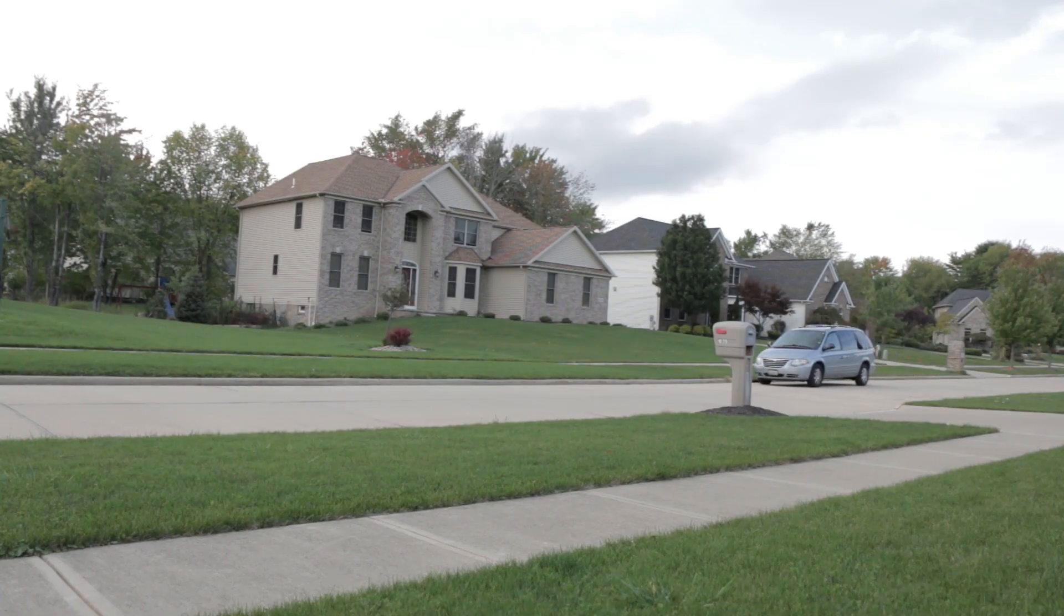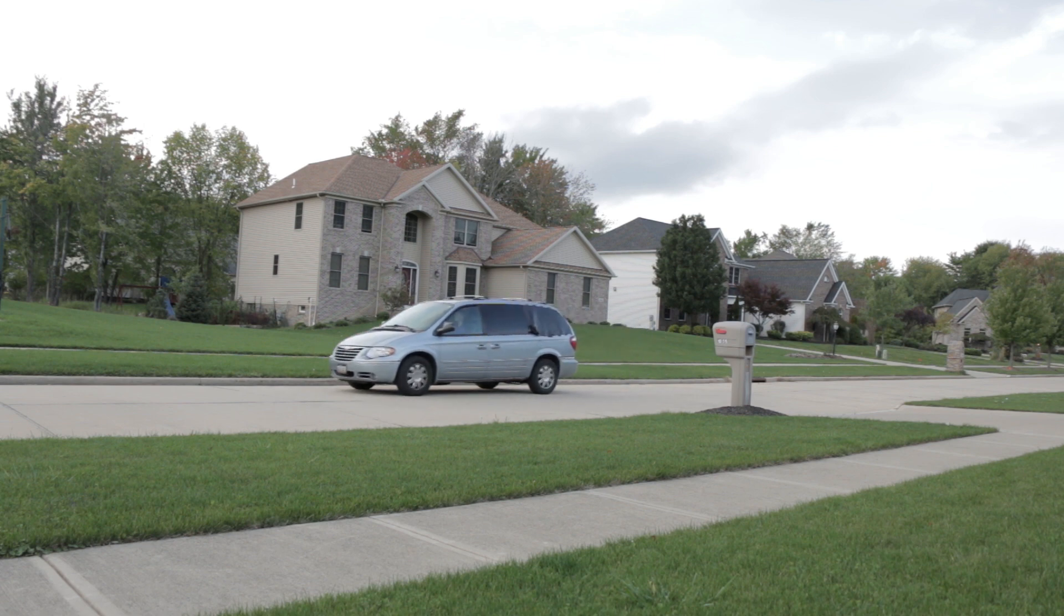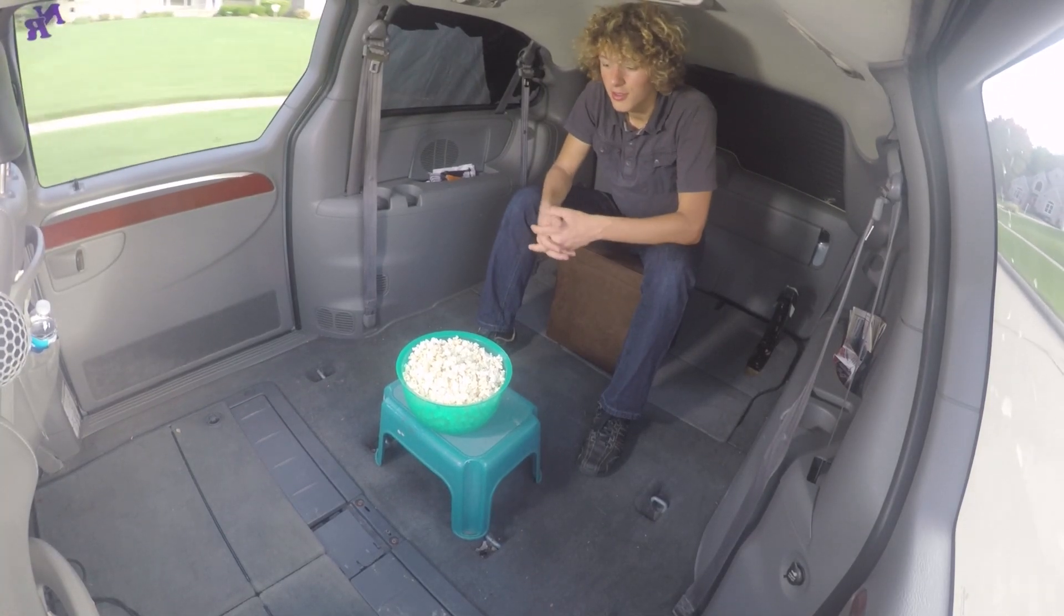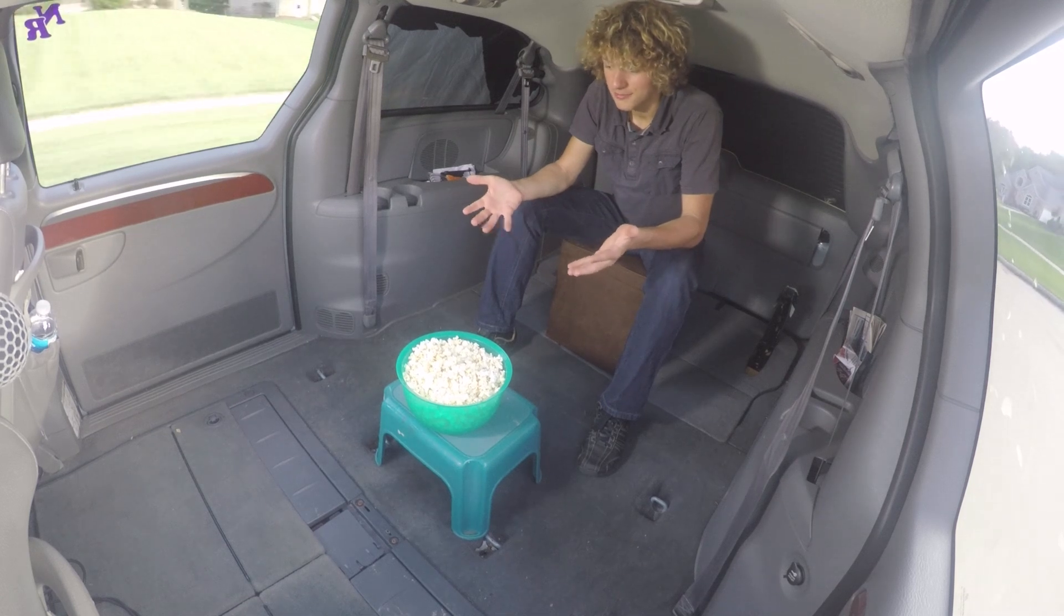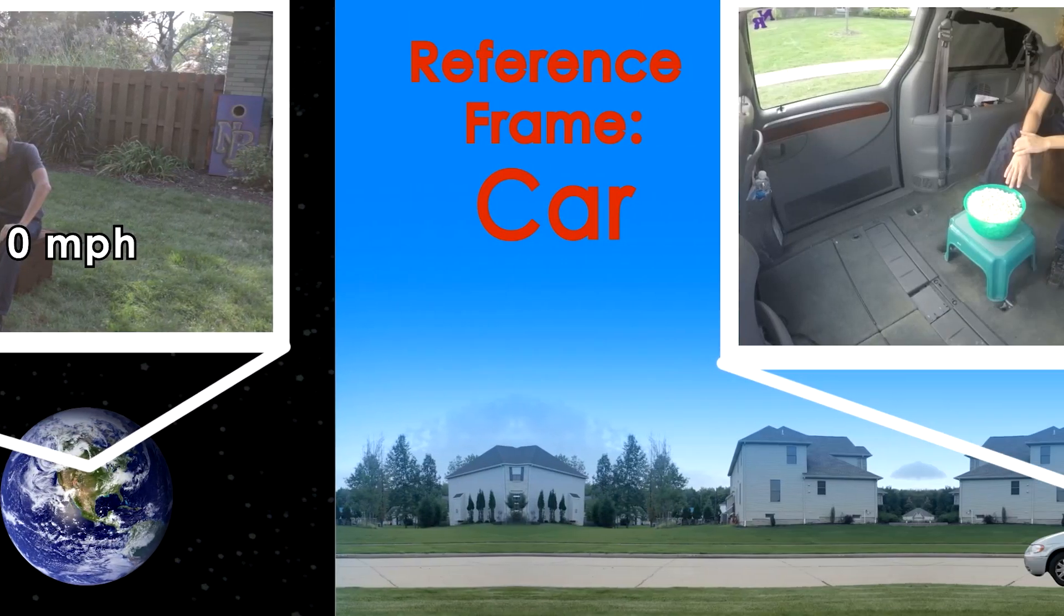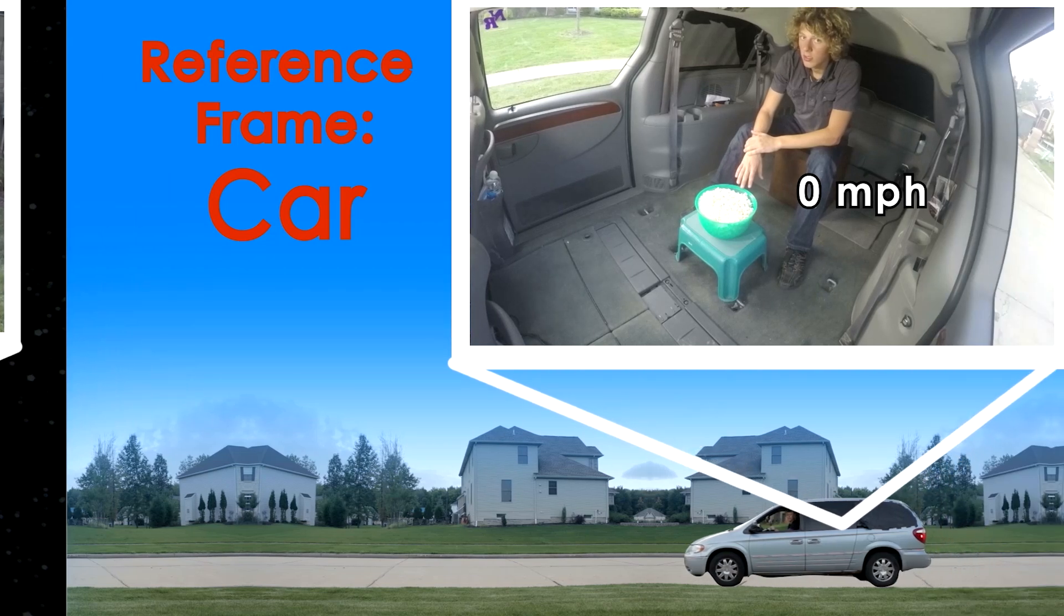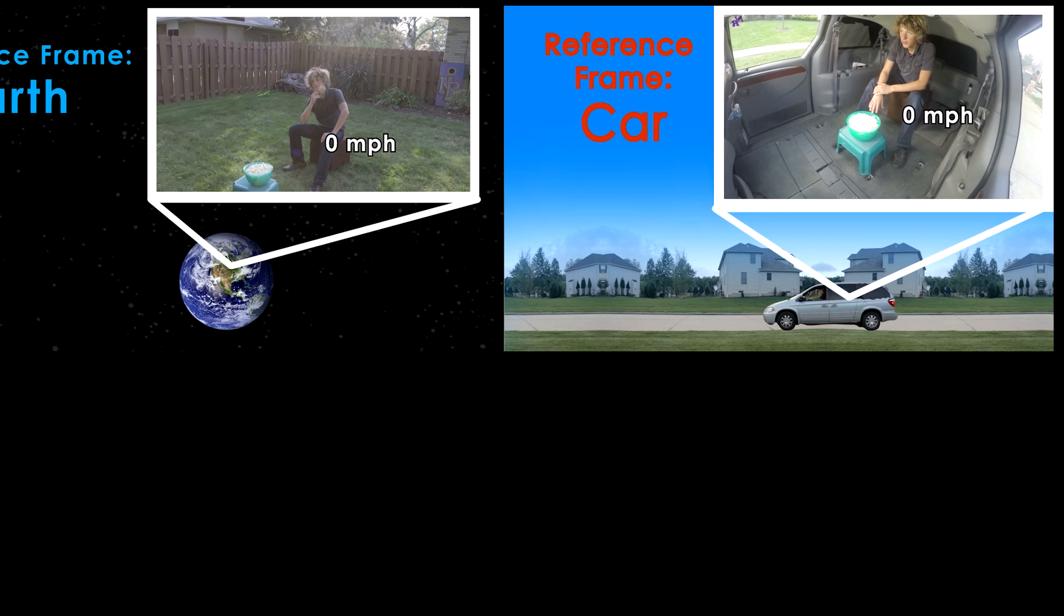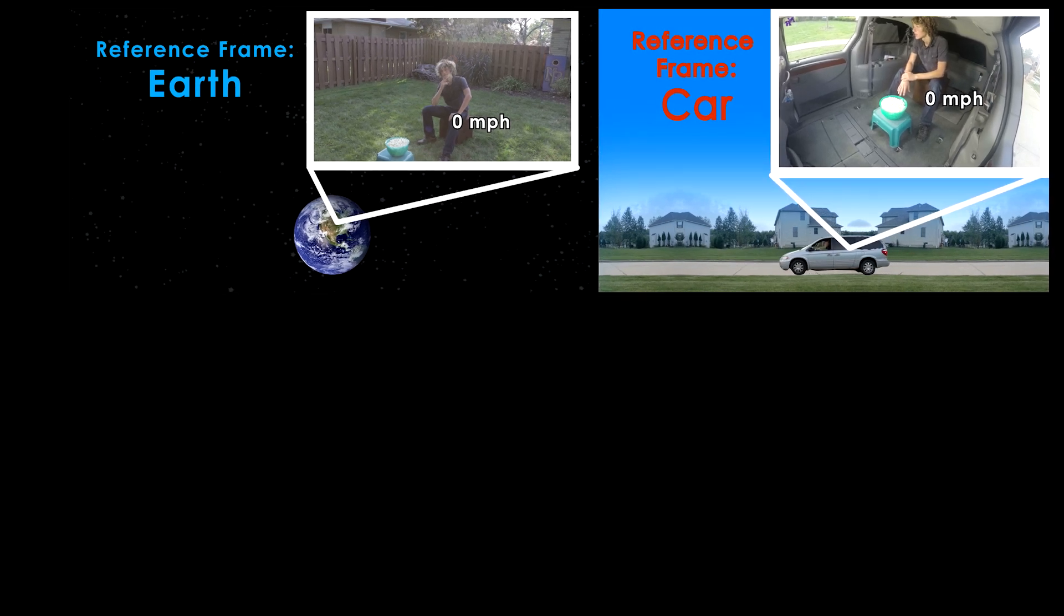But if the car travels at a nice constant speed, then the exact same thing happens as when I was just sitting on the earth. Nothing. In both the reference frame of the earth and the car, the popcorn doesn't move. Both the earth and car were moving at different speeds, but as far as I could tell, the laws of physics acted exactly the same.